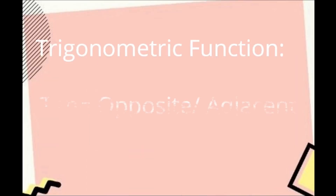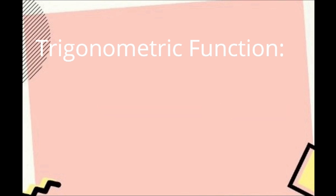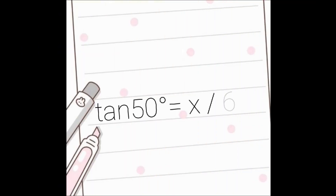To find X, we will use the trigonometric function tangent, which is tangent equals opposite over adjacent. Now we will substitute our measurements to the equation: tan(50°) equals the opposite side, which is X, over the adjacent side, which is 6 meters.